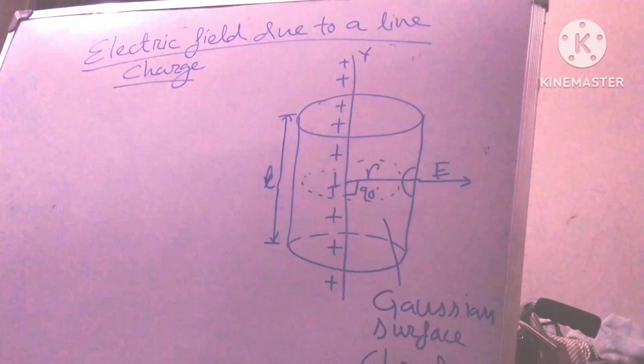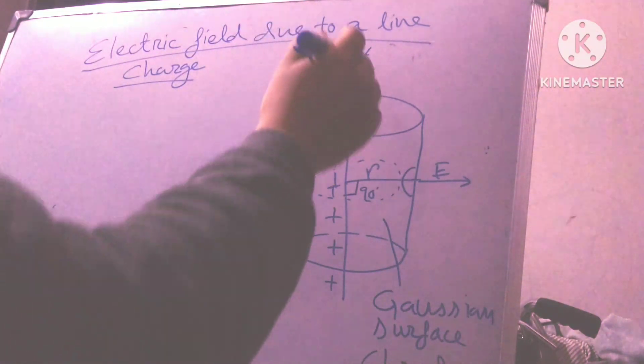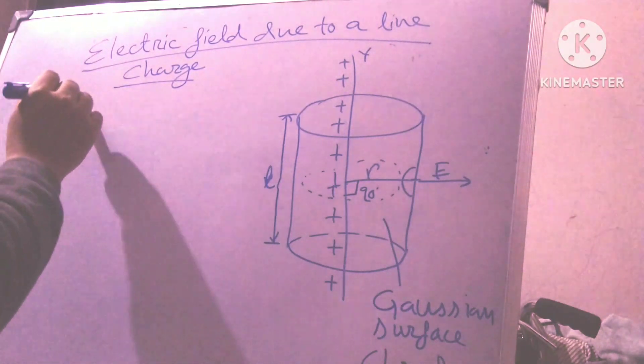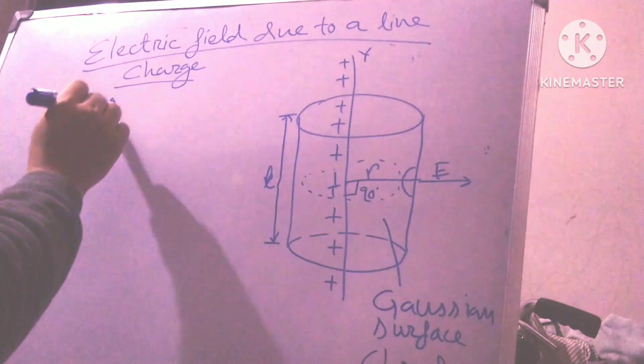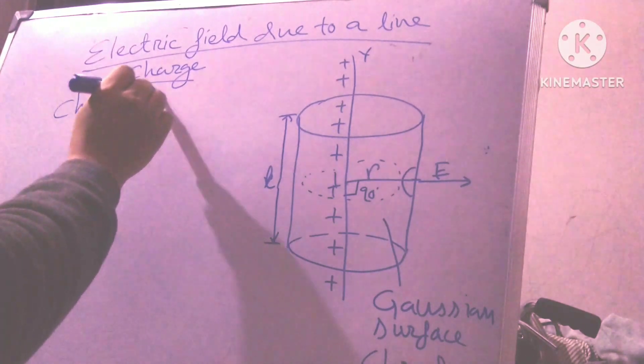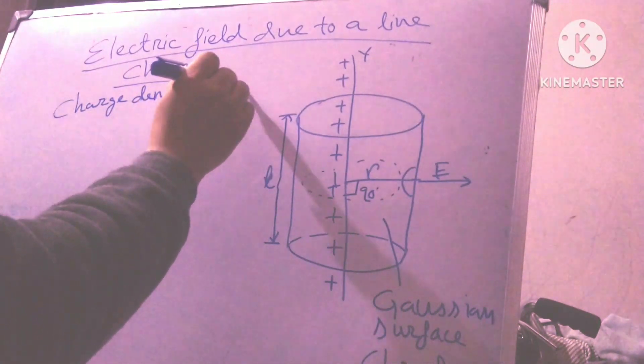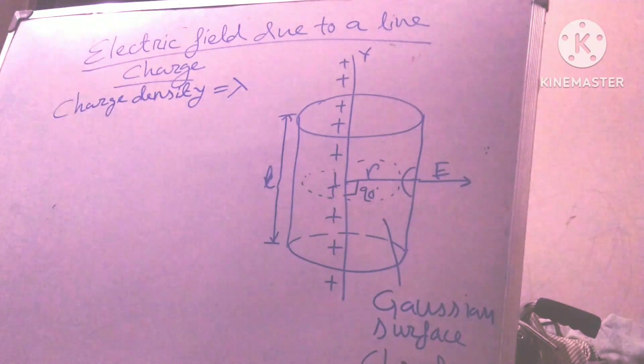Now we discuss, consider thin infinitely long straight line charge having a uniform linear charge density lambda. My charge density, charge density is lambda.